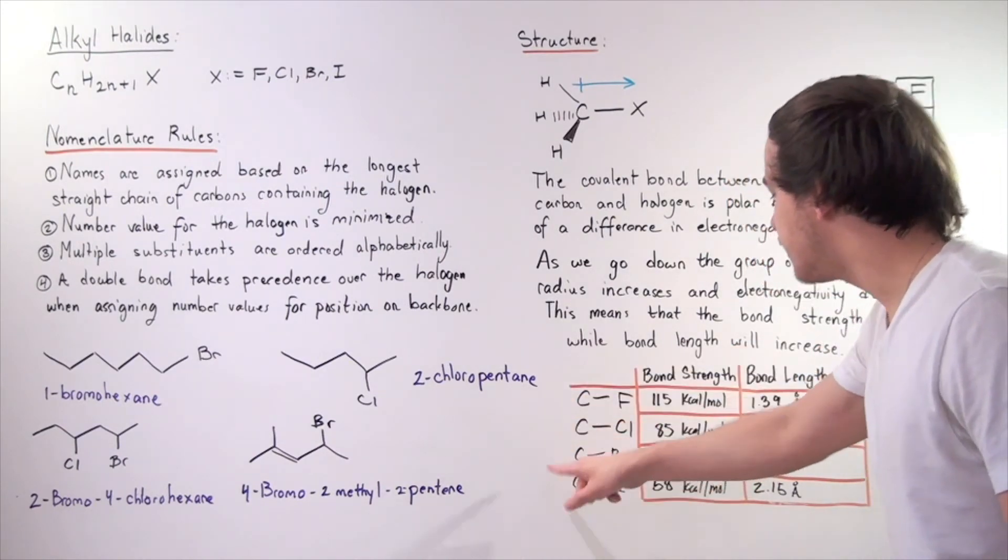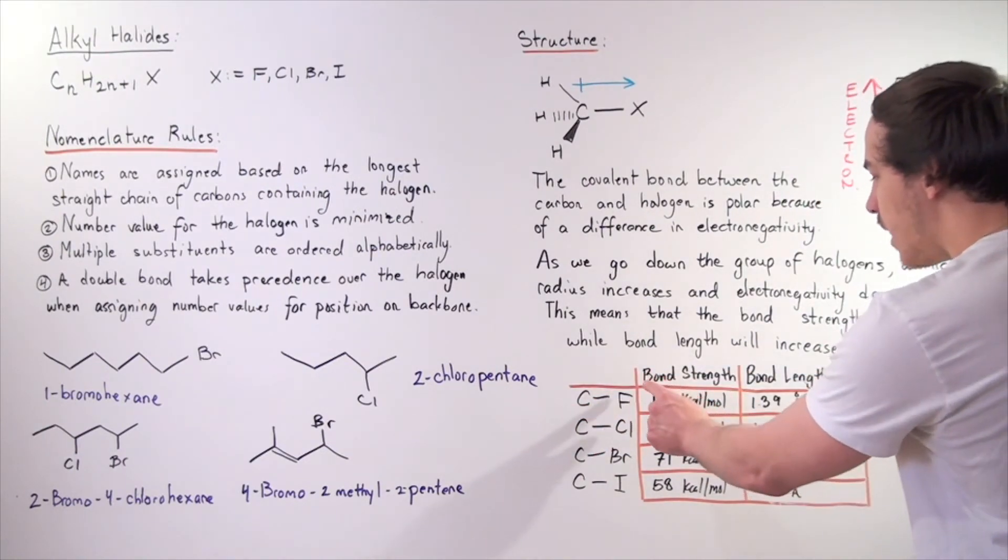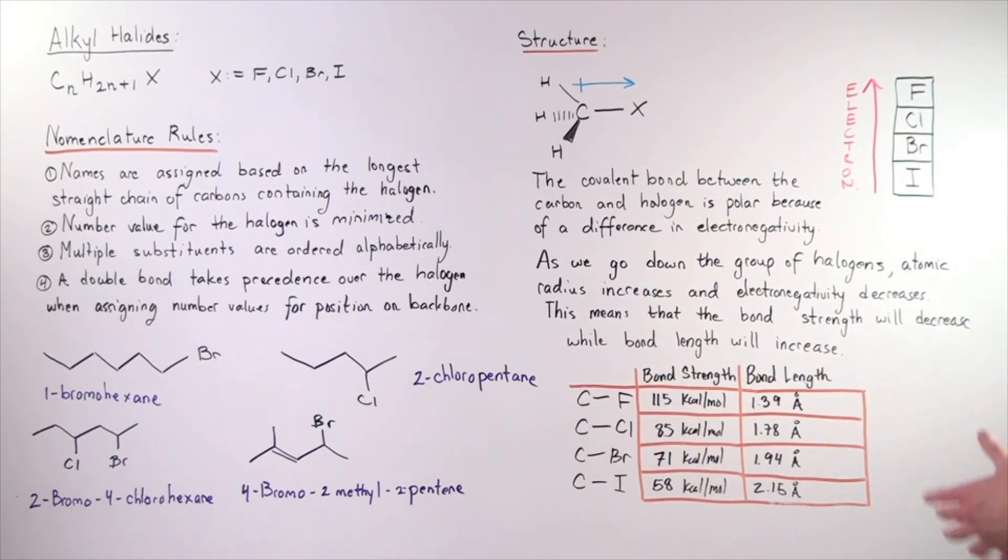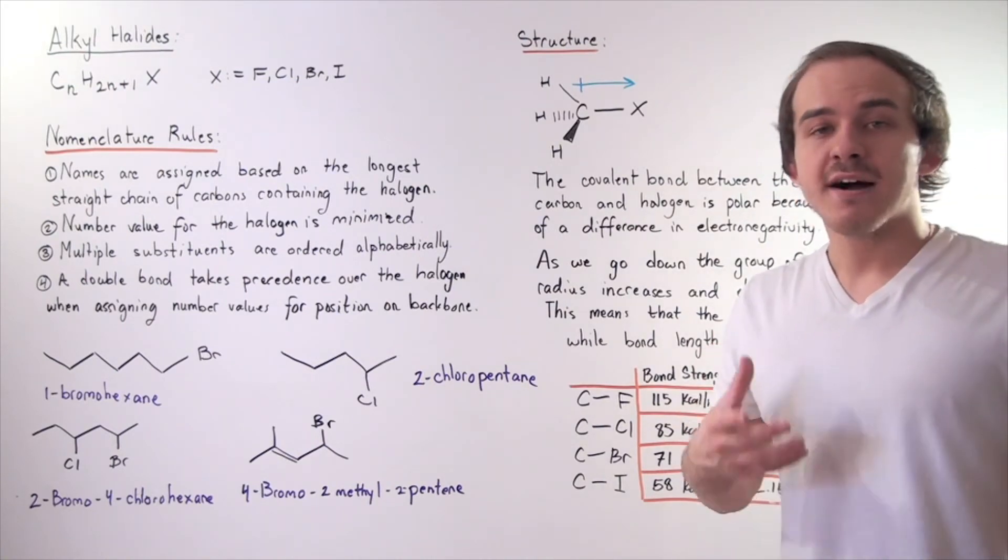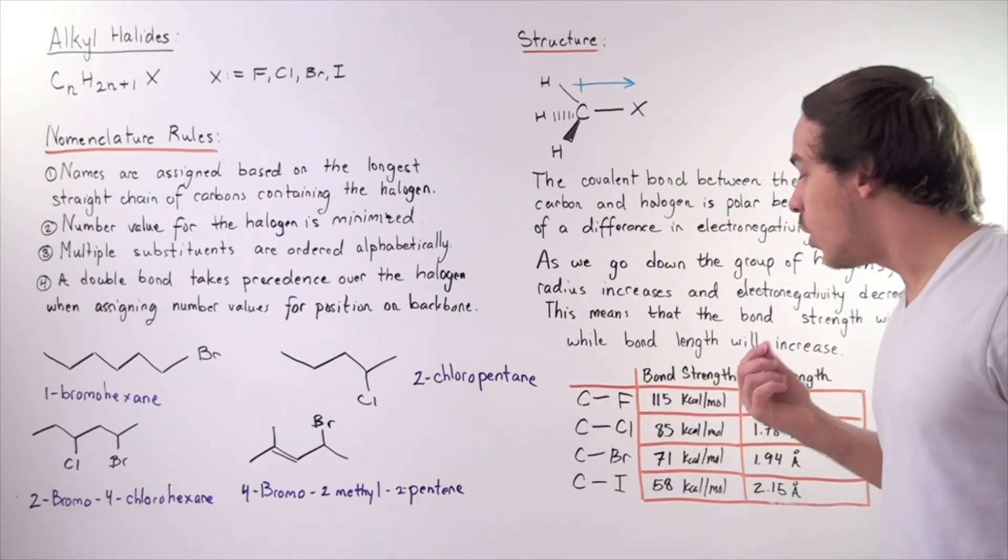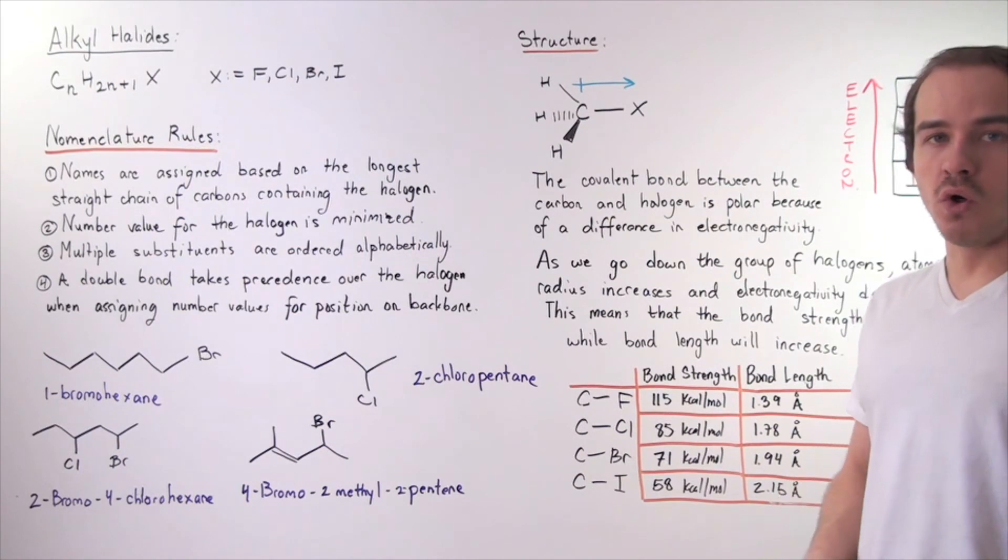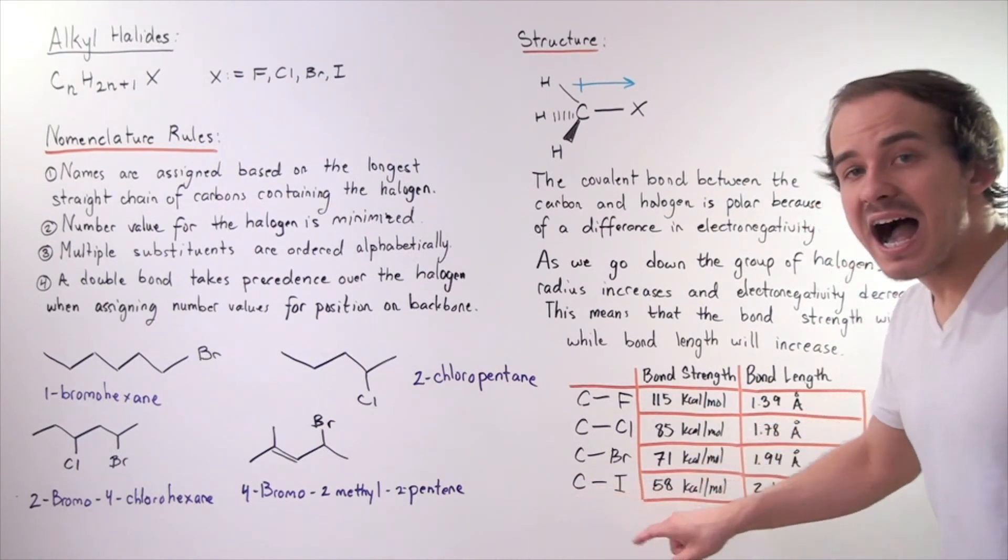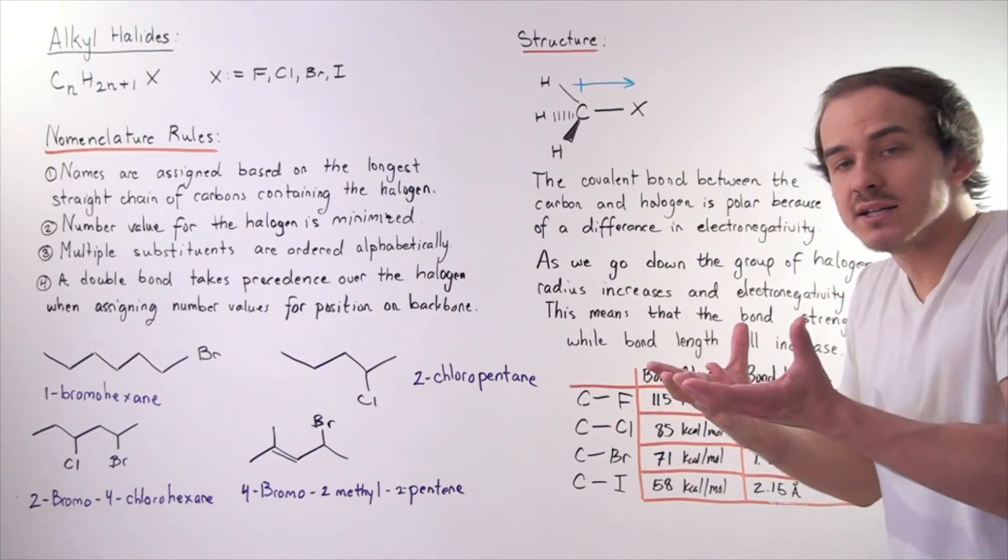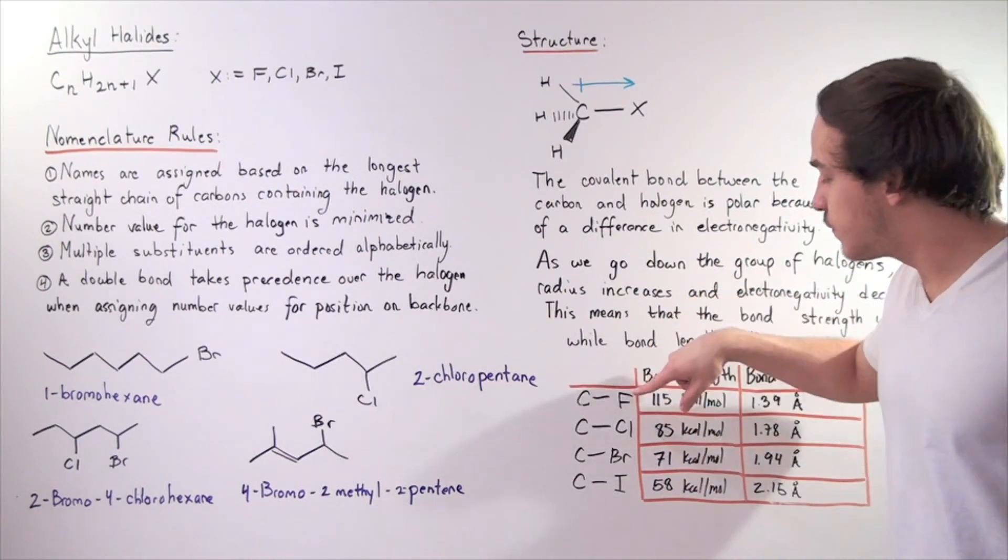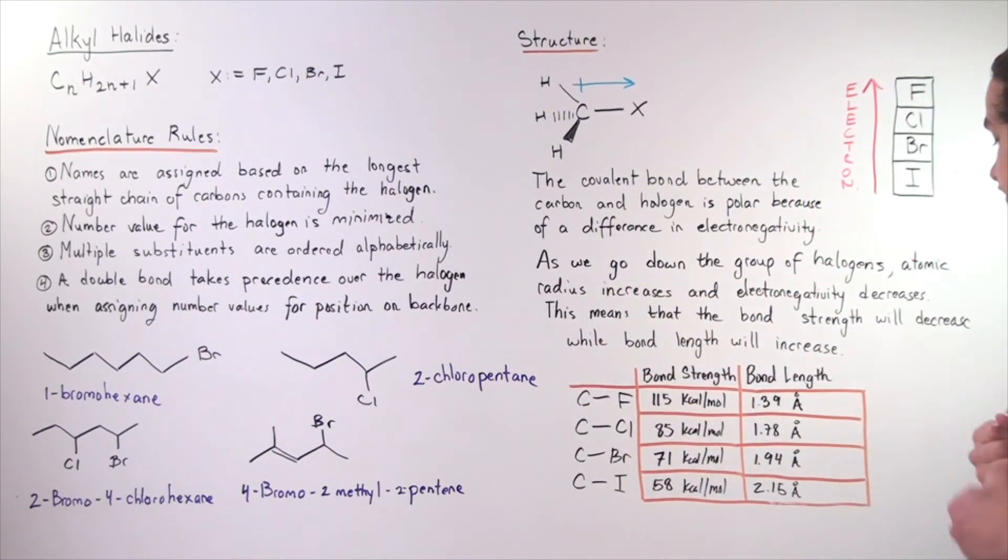Let's compare the bond length and strength for all of our carbon-halogen bonds. Notice that for bond strength, our carbon-fluorine bond is the strongest. It takes 115 kcal per mole of energy to break our bond, one mole of CF, while it only takes 58 kcal per mole of energy to break the CI bond. That means this bond is much stronger. It's held much more strongly because of the pull of this fluorine. The fluorine is very electronegative, so it will pull the electrons closer.